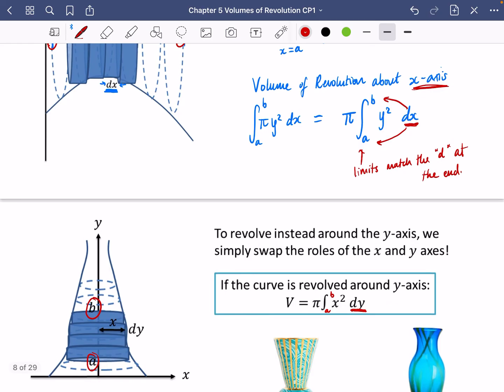So if you're rotating it around the x-axis, it is pi y squared dx. And the limits would be x limits. And if you're rotating it about the y-axis, it would be pi x squared dy. And the limits would match the dy part that go at the end there.